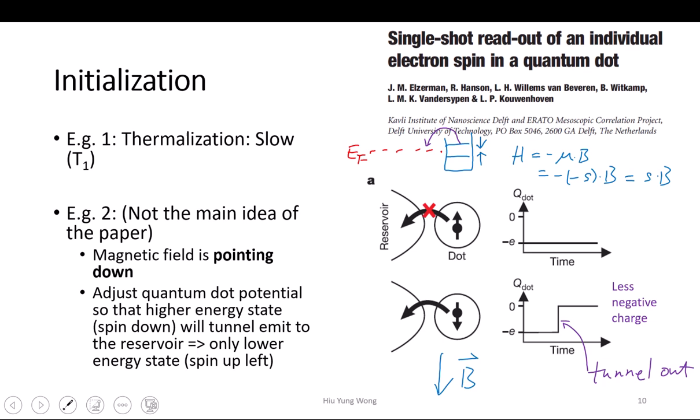How is the quantum dot formed? For a quantum dot, we need to apply a potential to it. Basically you raise the barrier around the dot — then the potential becomes a barrier. I will show the circuit later.